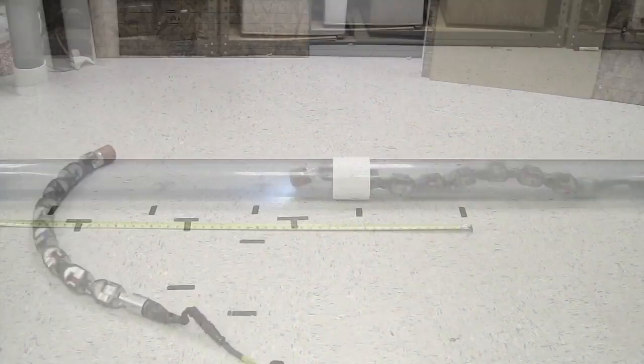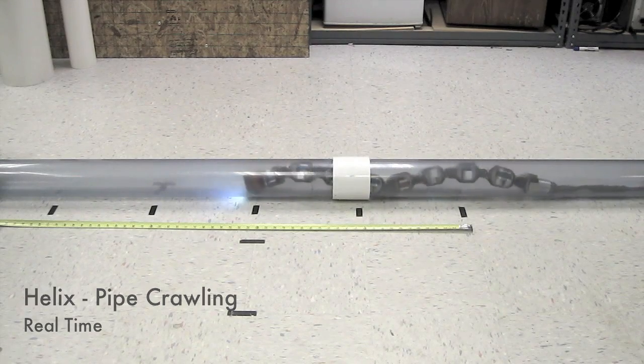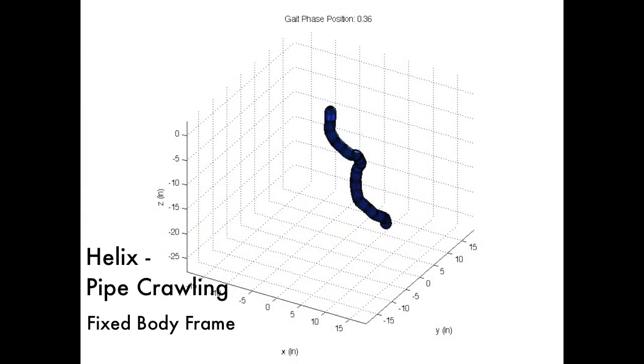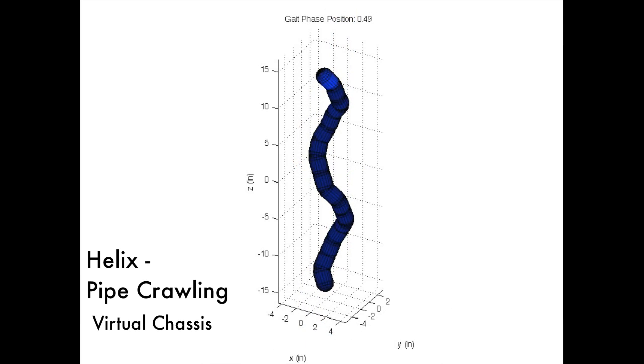In some cases, we can further exploit symmetry in the robot's shape and constraints of the environment to further optimize the virtual chassis. For example, in pipe crawling, we can use the solution computed through SVD as an initial seed point for optimization that aligns the virtual chassis with the true centerline of the robot's shape.